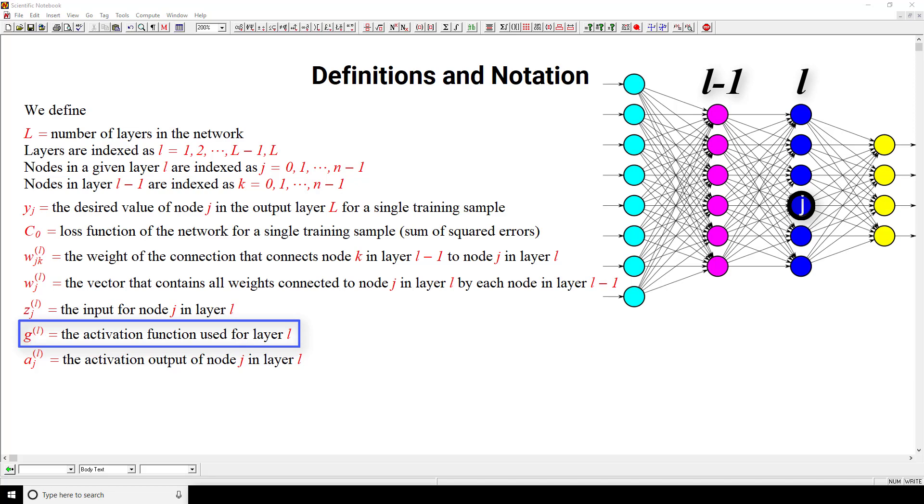And finally, we define A sub j superscript small l as the activation output of node j in layer l. So, what do we get after we pass our input from a node into the activation function? That's going to be the activation output that's then passed on to the next layer. And so we're representing that with this A sub j superscript l here. Alright, so these are all the definitions that you need to know before moving forward.